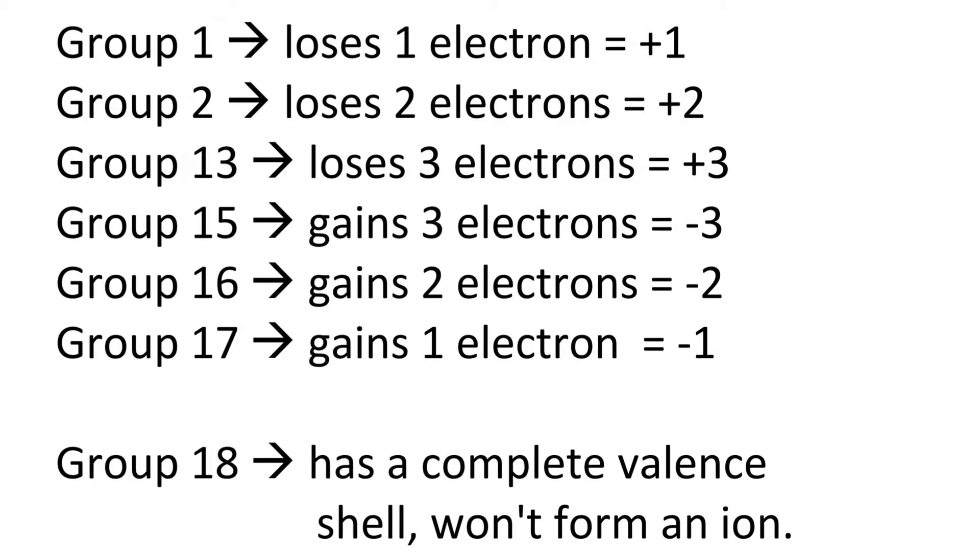The different groups behave differently. If we look at group 1 elements, they have one valence electron. They lose one electron and the whole point of that is to get back to stable or the noble gas that's before it or after it. In this case, you lose one electron. Lithium and sodium are examples of that.